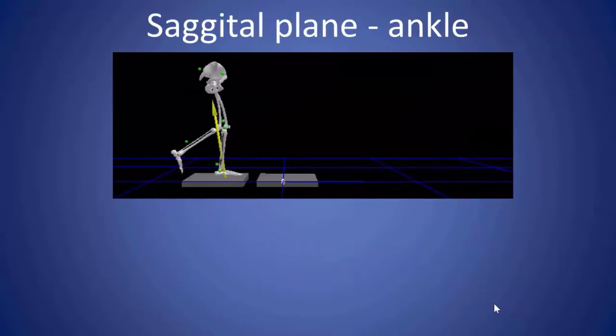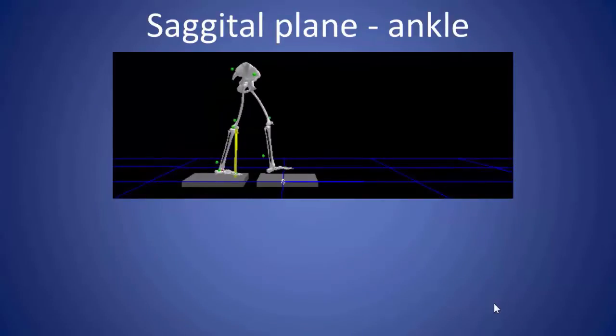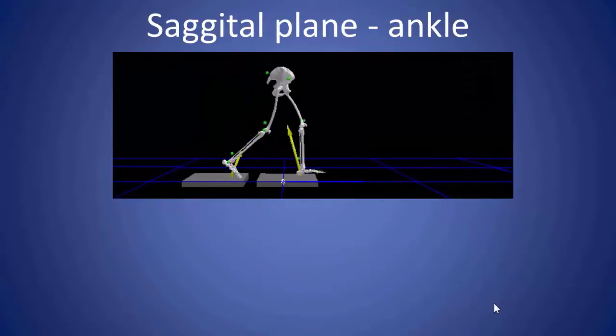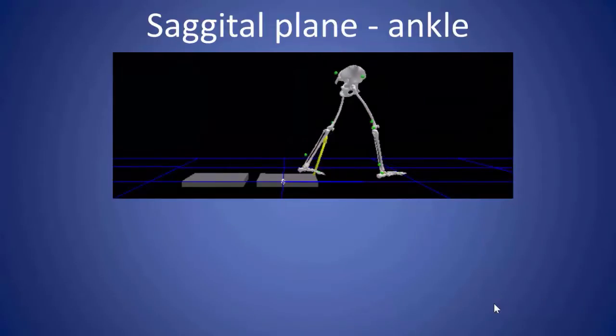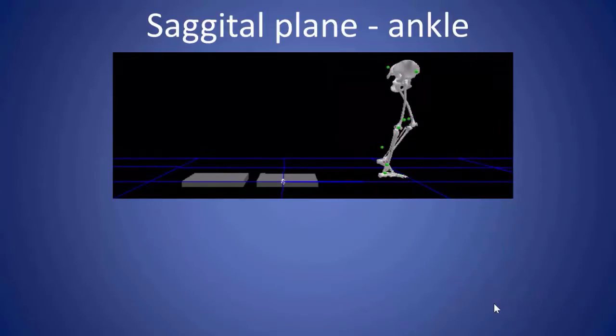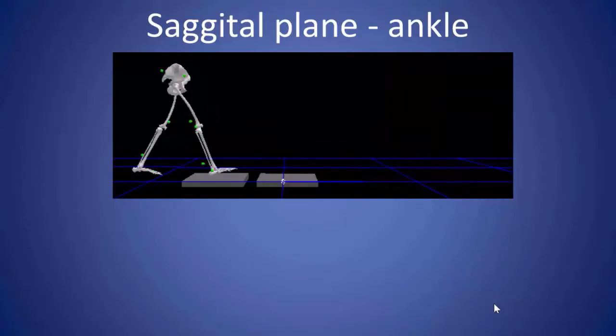Finally, the ankle, which is the most complex of all the joints because you have some plantar flexion at loading, dorsiflexion through stance, followed by plantar flexion at toe-off, followed by dorsiflexion through swing.